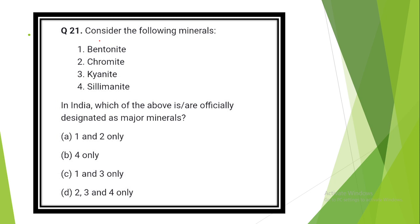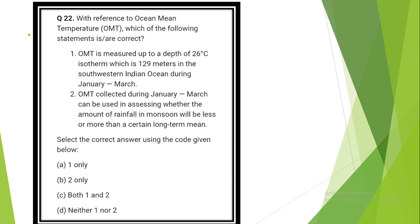Consider the following minerals. In India, which of the above is or are officially designated as major minerals? The answer is option D: Chromite, kyanite, sillimanite. Question number 22. With reference to ocean mean temperature, which of the following statements is or are correct? Answer is option B: 2 only. Ocean mean temperature collected during January-March can be used in assessing whether the amount of rainfall in monsoon will be less or more than certain long-term mean.